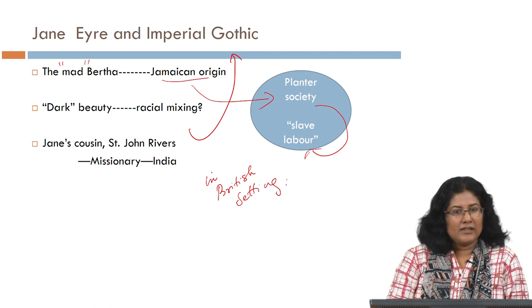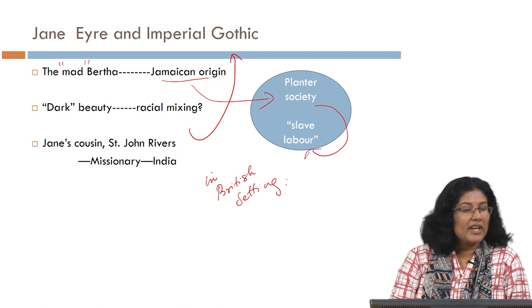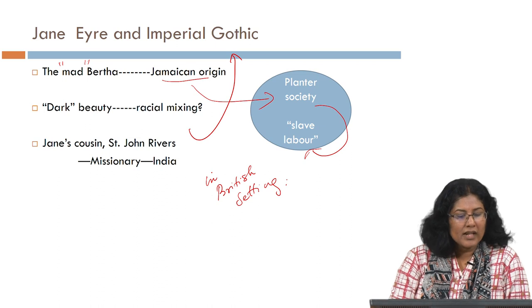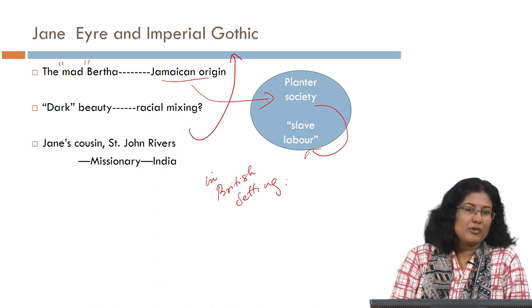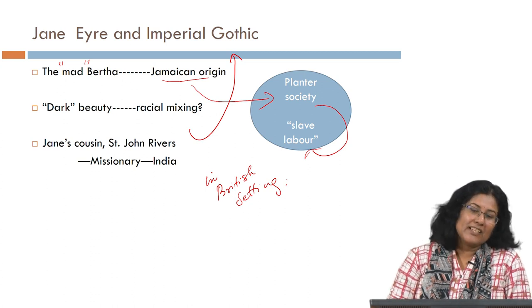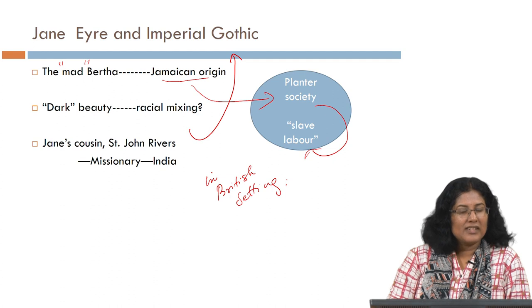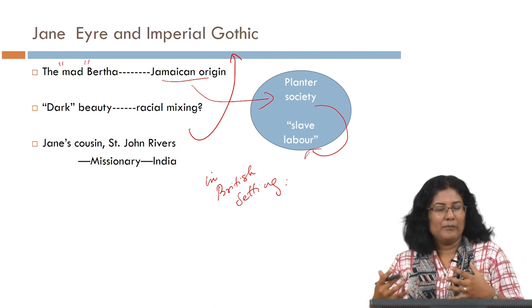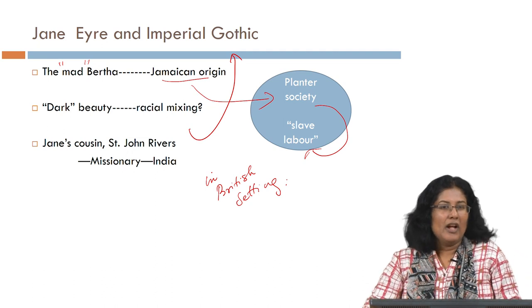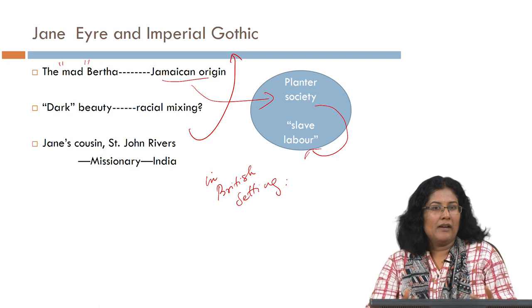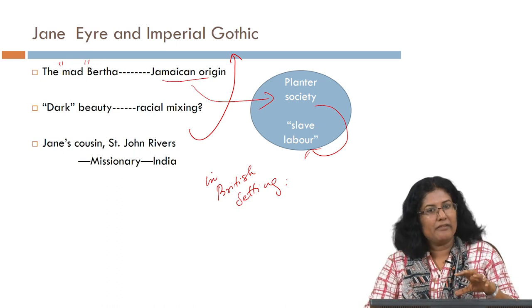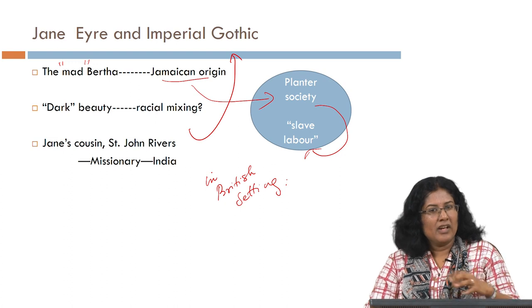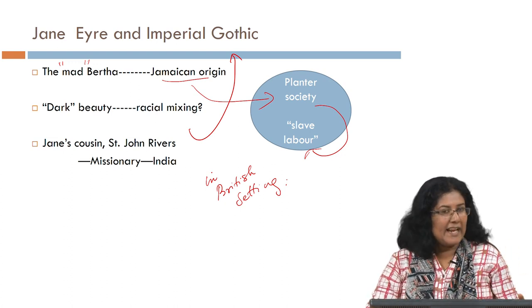There is another Imperial Gothic association in Jane Eyre through Jane's cousin Saint John Rivers, who is a missionary embarking on a journey to India to spread the word of God and bring enlightenment to that dark country. Saint John Rivers connects Britain with India, showing how the colony is coming back to the metropolis and disturbing the equanimity and stability of the home — which seems to be one of the functions of colonial people and objects in British fiction.